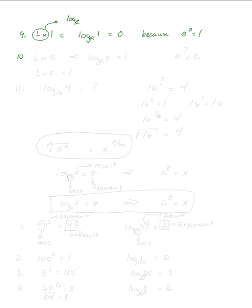How about ln(e)? That translates to log base e of e. We're asking: e to what power gets me back to e? We've generalized that before — it has to be 1. So log base e of e equals 1, which means the natural log of e is 1.